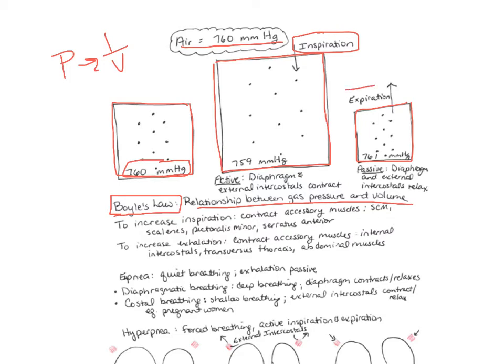For expiration or exhalation, you decrease the size of the thoracic cavity, which increases pressure. Now you blow that air out, because air always moves from higher to lower pressure.